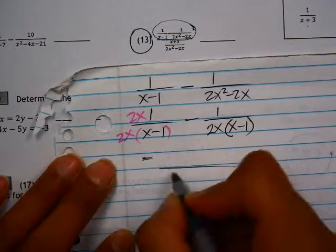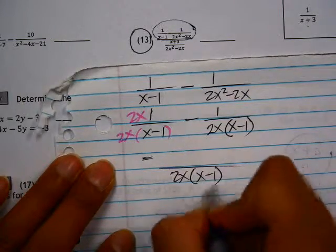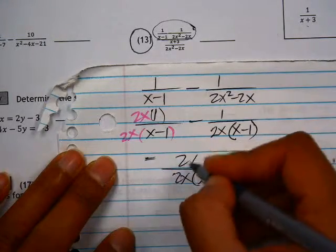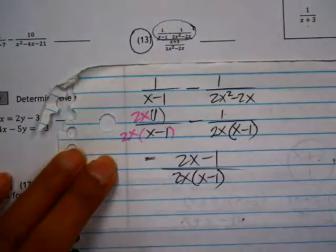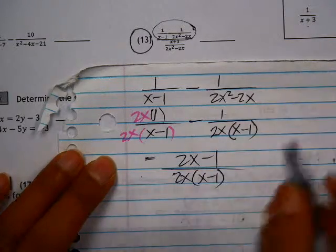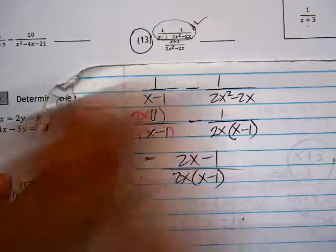Now that we have a common denominator of 2x, quantity x minus 1, I can combine these. So this is 2x minus 1, and then in the denominator I have 2x times the quantity x minus 1. So right now I'm done simplifying the numerator.